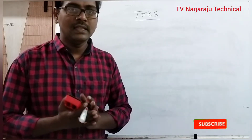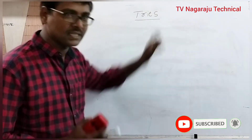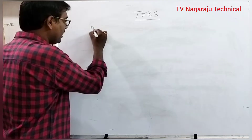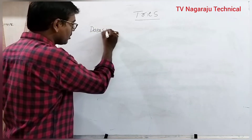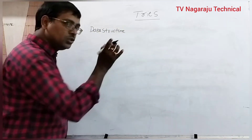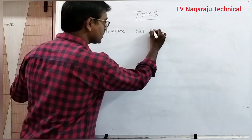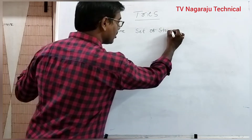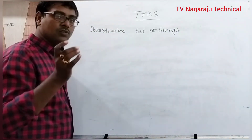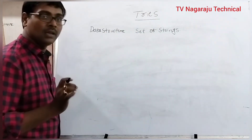Welcome to our channel. In this session, we will discuss the concept of trie. A trie is a data structure used to represent a set of strings. That is, the set of strings are represented by using a trie.